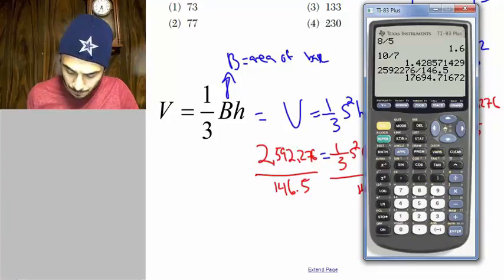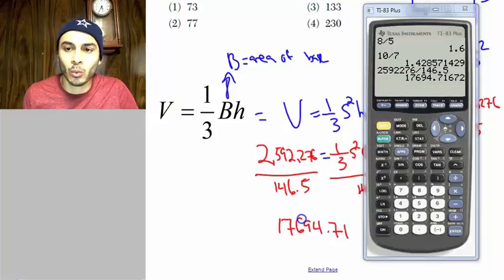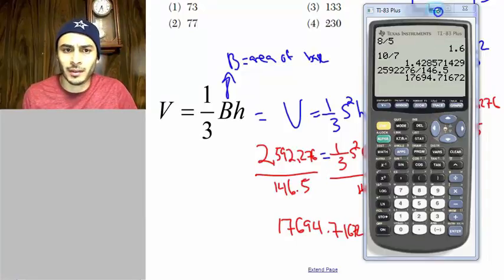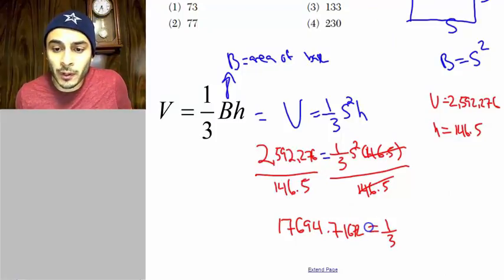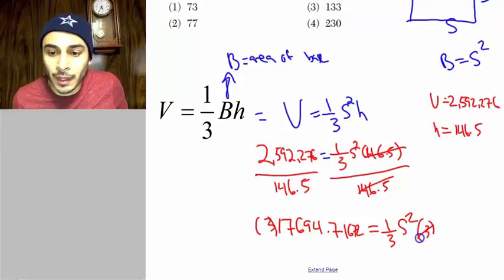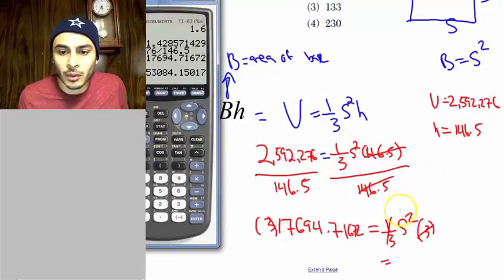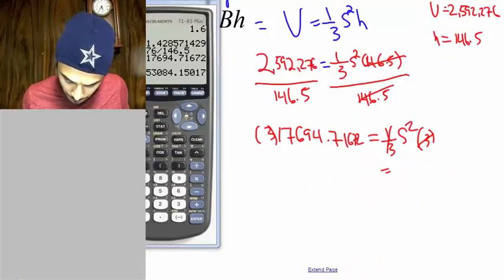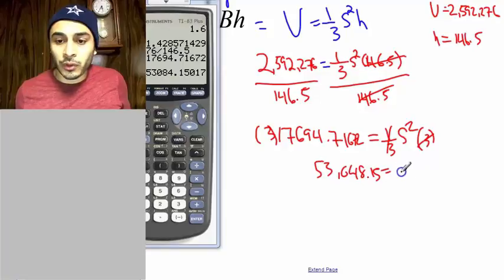So I get 17,694.71672. These numbers are just so gigantic. All right, so it equals one-third side squared. And then now I've got to get rid of that one-third. So I'll multiply both sides by 3. And then that cancels out the one-third here. And then, so then it's that number times 3. So that's that. So let's go ahead and write that down.